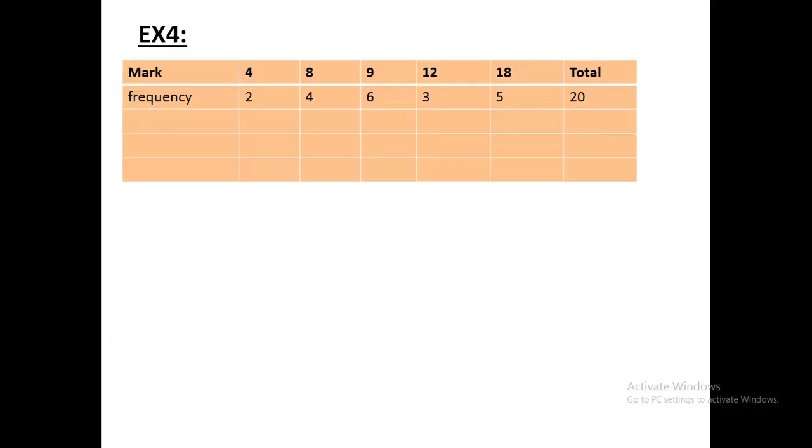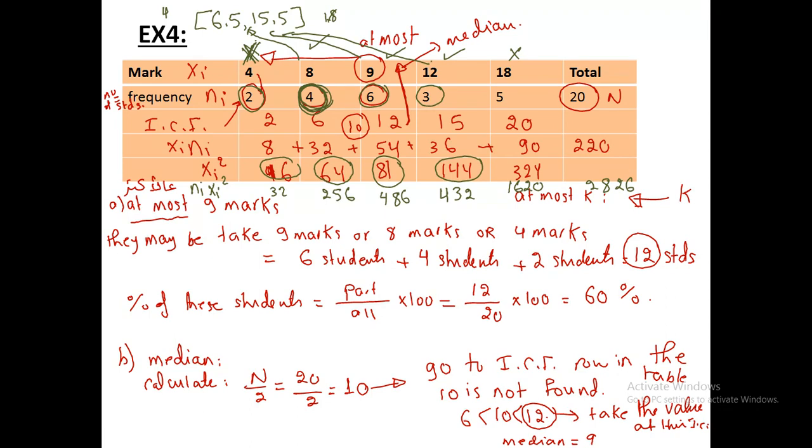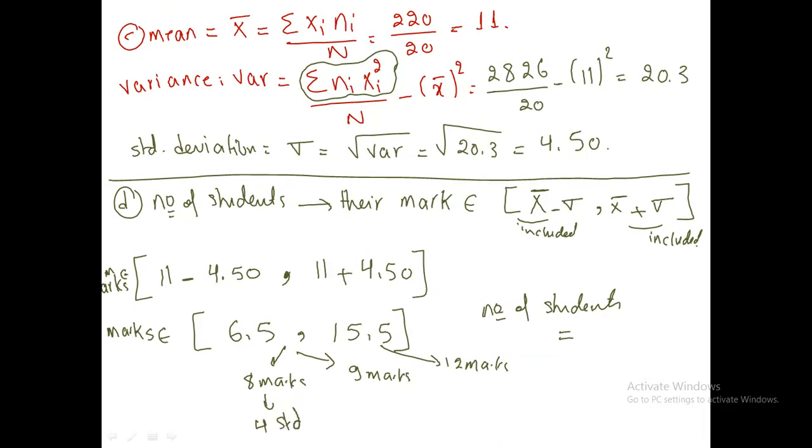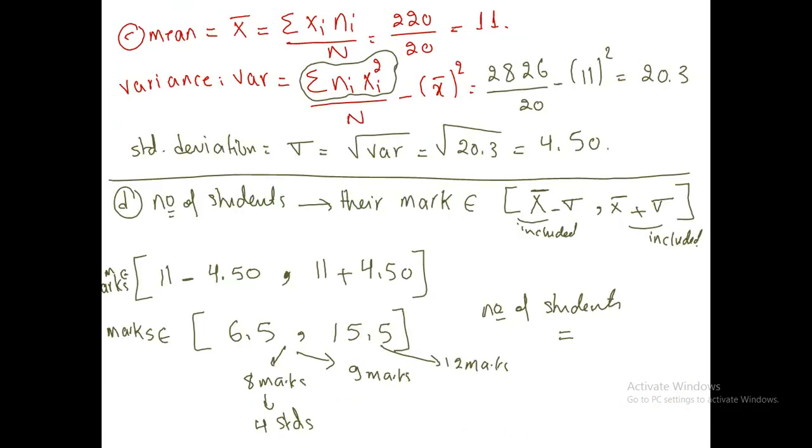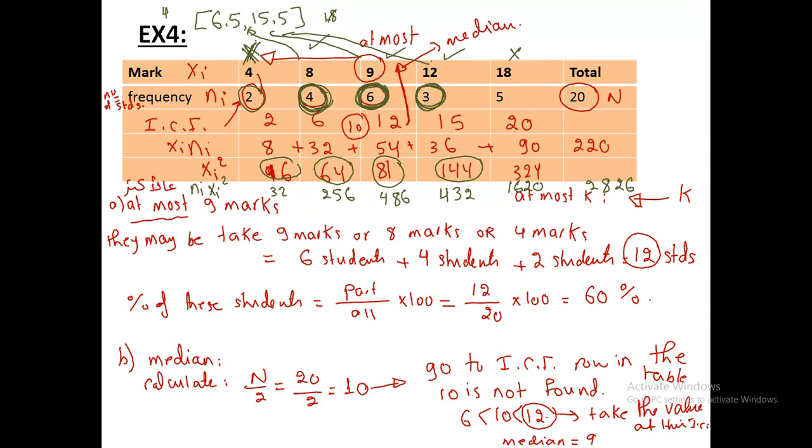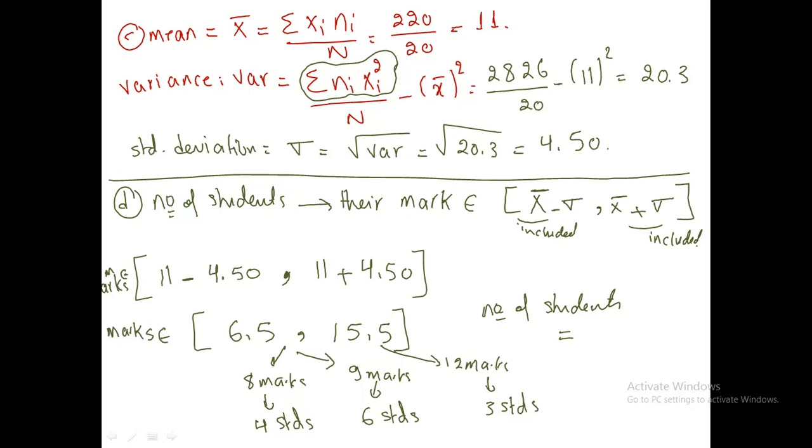So the number of students, we can take 8 marks, we can take 9 marks, we can take 12 marks. We have 4 students take 8 marks, at 9 marks we have 6 students, and at 12 marks we have 3 students. So here number of students is 4 plus 6 plus 3, which is 13 students. Their marks is between 6.5 and 15.5. Thank you very much.